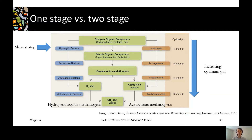The other steps work best closer to neutral, especially the last step — methanogenesis. You want neutral, and that's important for actually getting the gas. So you can't really have both of them work really well in a continuously stirred system.